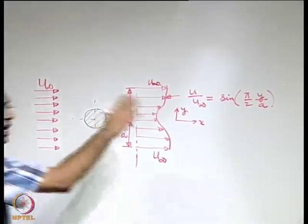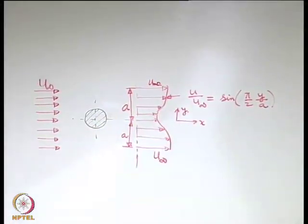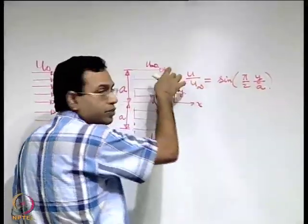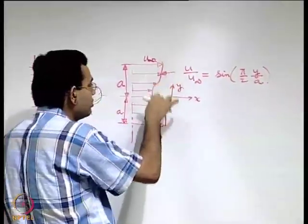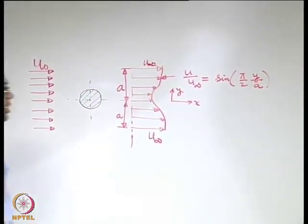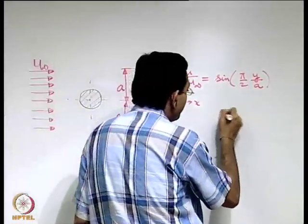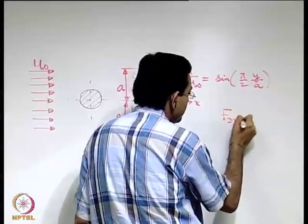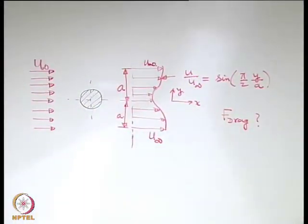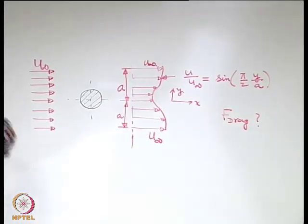Not that it has to be like this — this is just an example. We are trying to satisfy the condition that when y equals a, u equals u-infinity; that is how this velocity profile is defined. So the question is: what is the total drag force on the solid body exerted by the fluid? Let us assume the density of the fluid is rho and we have to find out the force based on these dimensions.